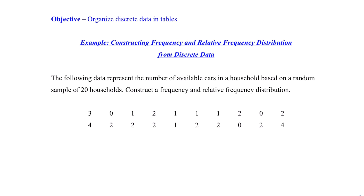So let's jump into our objective where we'll organize discrete data in tables. In the first example, we're going to construct frequency and relative frequency distributions from discrete data. We're told the following data represent the number of available cars in a household based on a random sample of 20 households. Now, the data is discrete because we would count the number of cars in each household as opposed to measuring them.